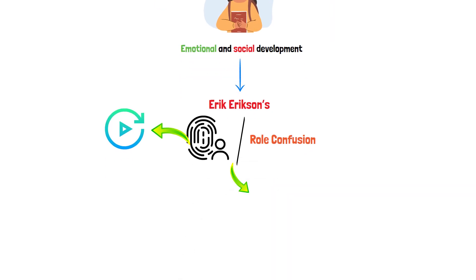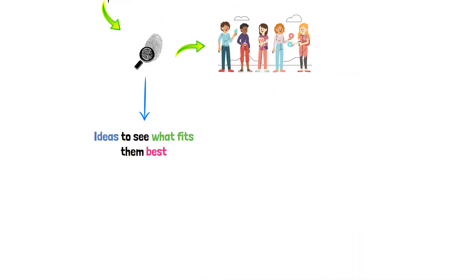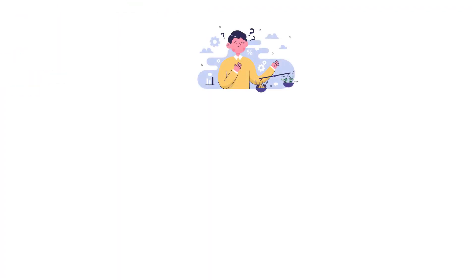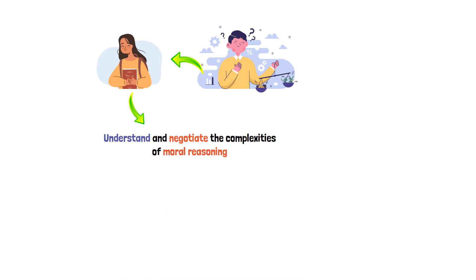This stage involves the exploration of identity, where adolescents try on different roles and ideas to see what fits them best. In addition, moral development becomes more prominent during this stage. Adolescents start to understand and negotiate the complexities of moral reasoning, often influenced by family, gender roles, and broader societal norms.